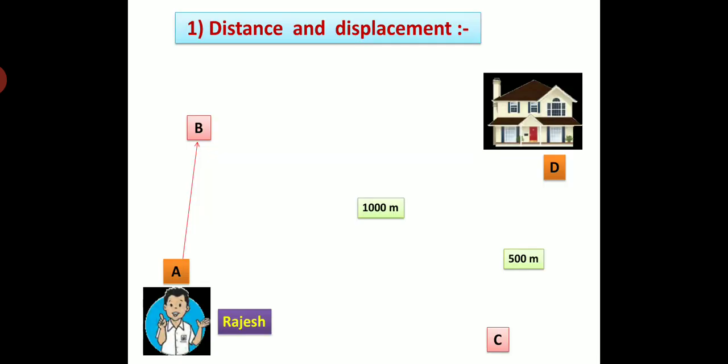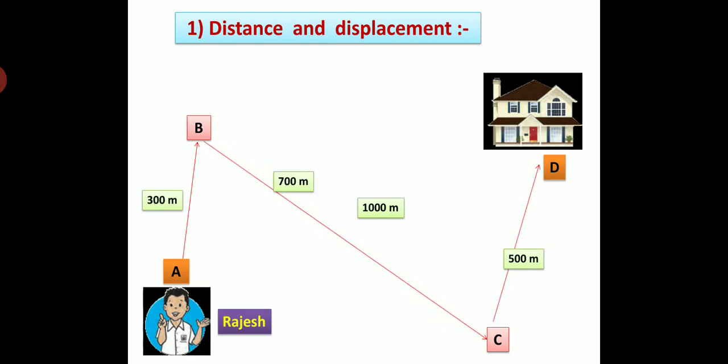Now we are going to see concepts of distance and displacement. For this, let's take one example. Rajesh is at point A and he wants to go to his house which is at point D. Rajesh traversed a distance AB to BC to CD. The distance traversed by Rajesh is AB plus BC plus CD, that is 300 meter plus 700 meter plus 500 meter. So, total distance traversed by Rajesh is 1500 meter.